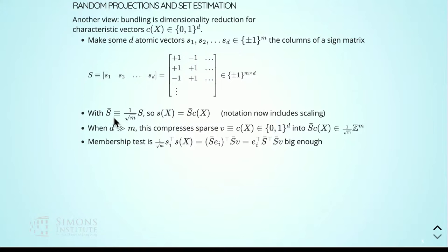We introduce S-bar, an appropriately scaled version of S. When d is much larger than m — when the ground set is very large — this is a compression of the characteristic vector from d dimensions down to m dimensions. You can do set-wise operations uniformly on all entries of the resulting vector, and recover from local errors. If you change one entry of a vector it's still similar to what it was similar to before — it's robust to local errors.